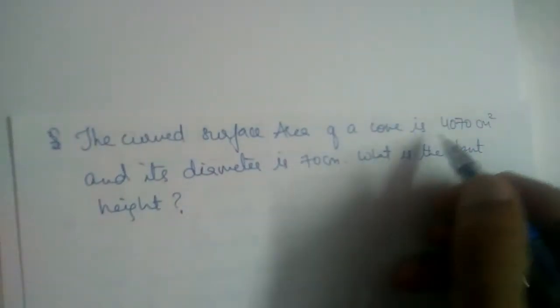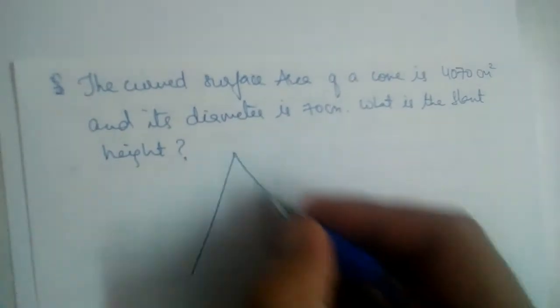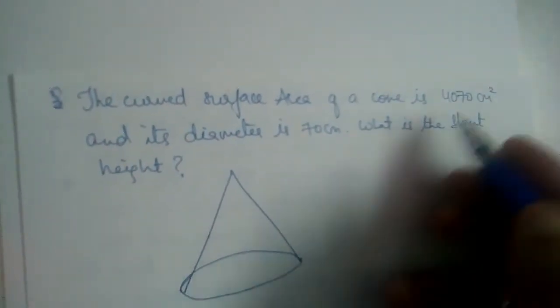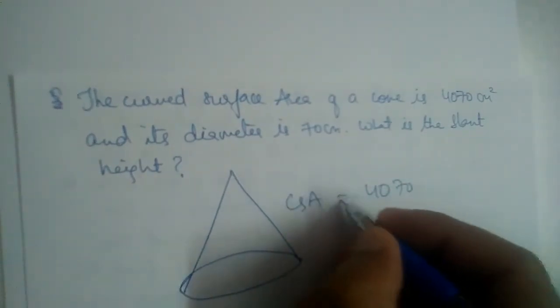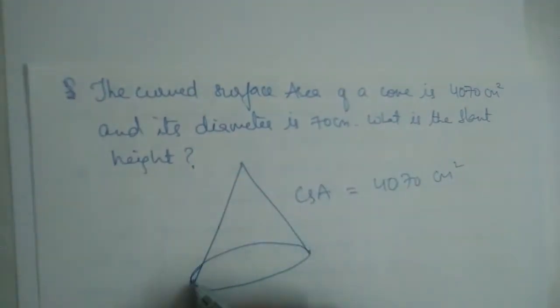The curved surface area of a cone is 4070 cm² and its diameter is 70 cm. So we have a cone whose curved surface area is 4070 cm².